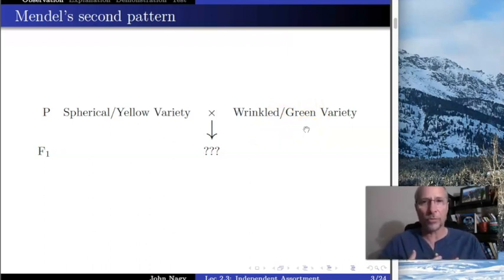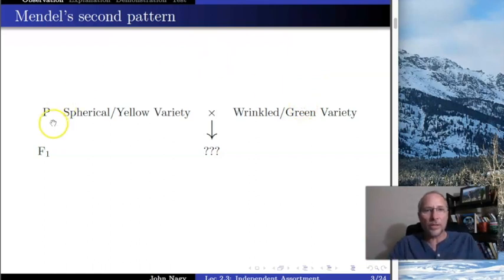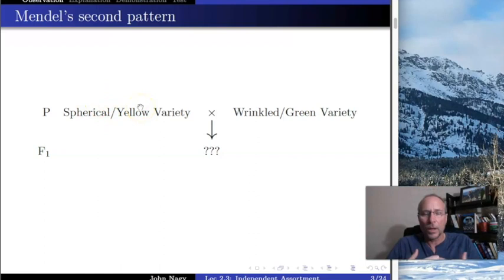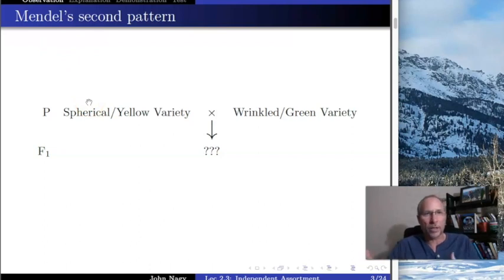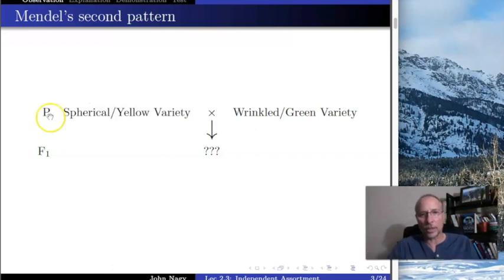How does this differ from what he was talking about before? Before, he was only looking at round versus wrinkled, or yellow versus green — he wasn't looking at both at the same time. Here he's looking at both at the same time because he's wondering whether the genetics of seed shape and seed color are connected. It's sort of like asking: do people with blonde hair tend to have blue eyes? That's the kind of question he's asking — how are these traits related to each other.